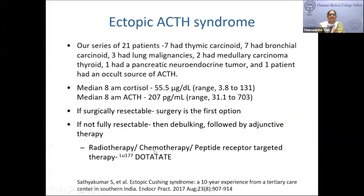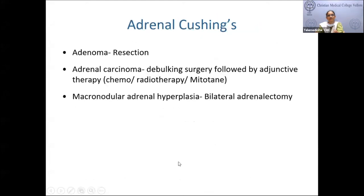In ectopic ACTH syndrome, thymic and bronchial carcinoids are most common, followed by lung malignancies, medullary carcinoma of thyroid, and pancreatic neuroendocrine tumors. These patients have very high ACTH and cortisol levels. If surgically resectable, surgery is first. If not fully resectable, debulking surgery to reduce ACTH levels is done, followed by adjunctive radiotherapy, chemotherapy, or peptide receptor targeted therapy with lutetium DOTATATE. For adrenal Cushing's, adenoma resection is curative; carcinoma requires debulking plus chemotherapy, radiotherapy, or mitotane (an adrenolytic drug). Macronodular adrenal hyperplasia requires bilateral adrenalectomy.